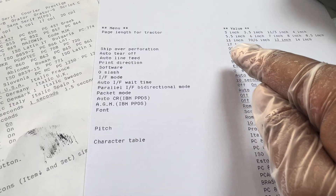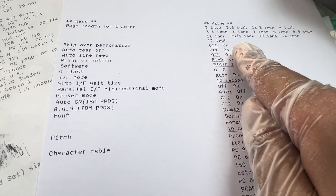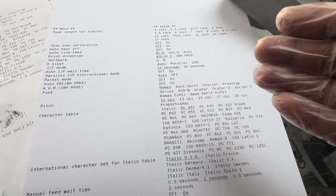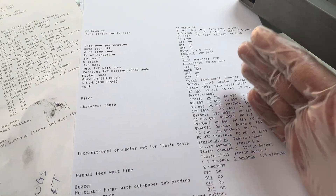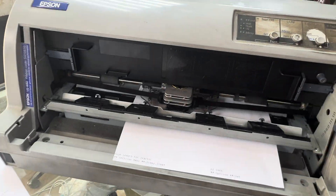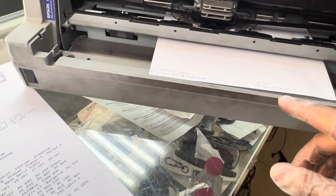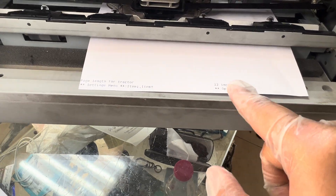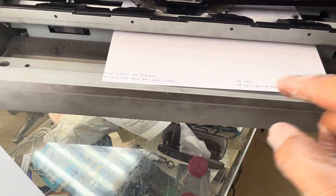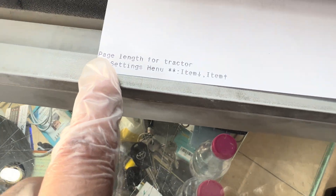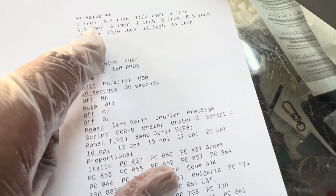No issue with these settings: page length for character should be 12 inch, skip over perforation should be off, and auto tier off you can set according to your requirement. These are the exact correct settings for a new Epson LQ 690 printer. Now, for the sake of argument, if I want to change something — for example, page length for tractor — how can we do that?